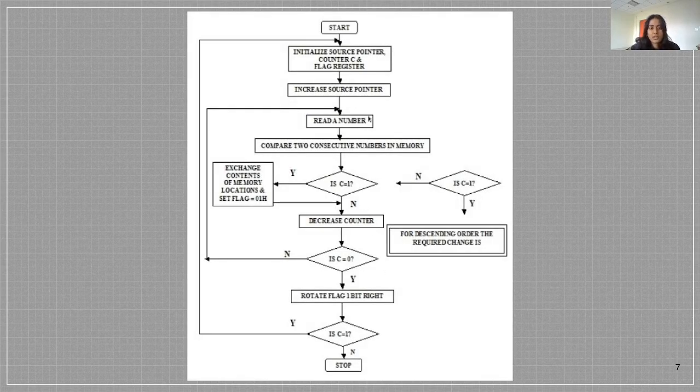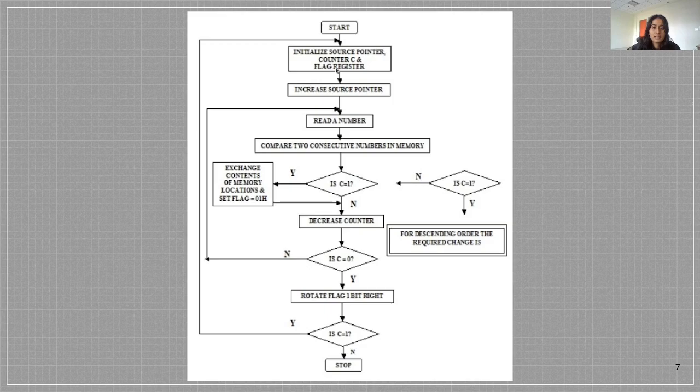This is the flow chart that can explain the bubble sort algorithm. We start then we initialize the source pointer, counter C, and flag register, then we increase the source pointer and read a number.